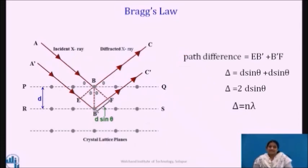The rays BC and B dash C dash will constructively interfere only when delta is equal to N lambda where N is the order of diffraction. The two reflected rays will be in phase with each other if the path difference is equal to integral multiple of wavelength and out of phase if it equals an odd multiple of lambda by 2. Therefore, the condition for reinforcement of scattered wave is 2D sin theta is equal to N lambda. This equation is called Bragg's equation or Bragg's law.